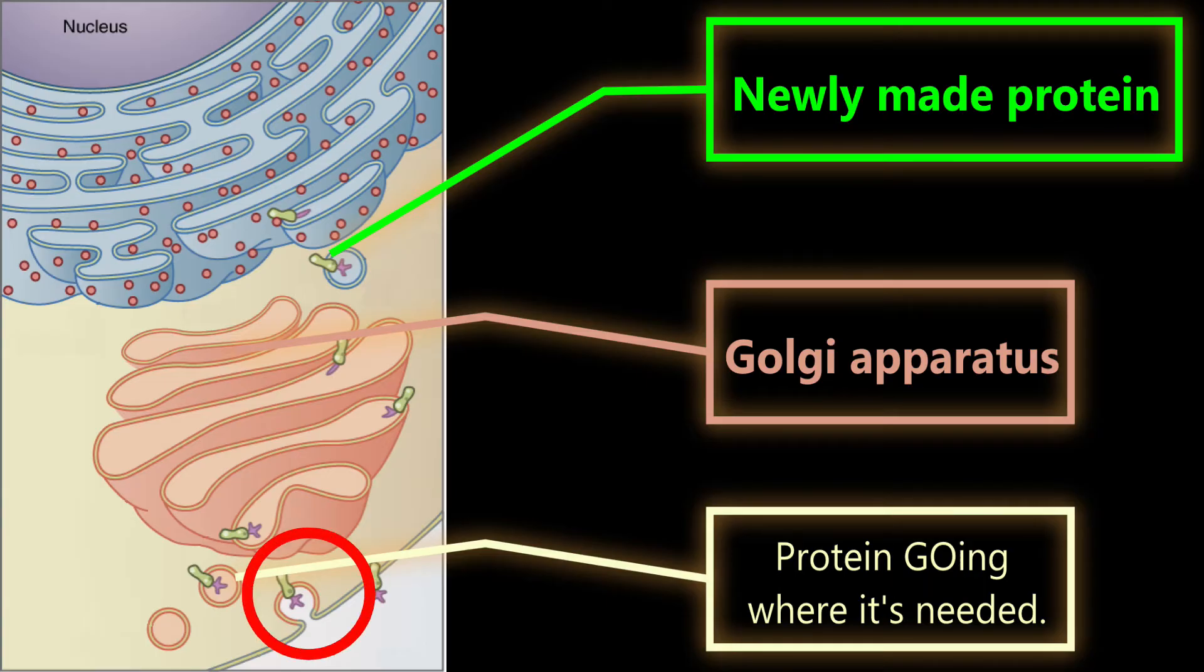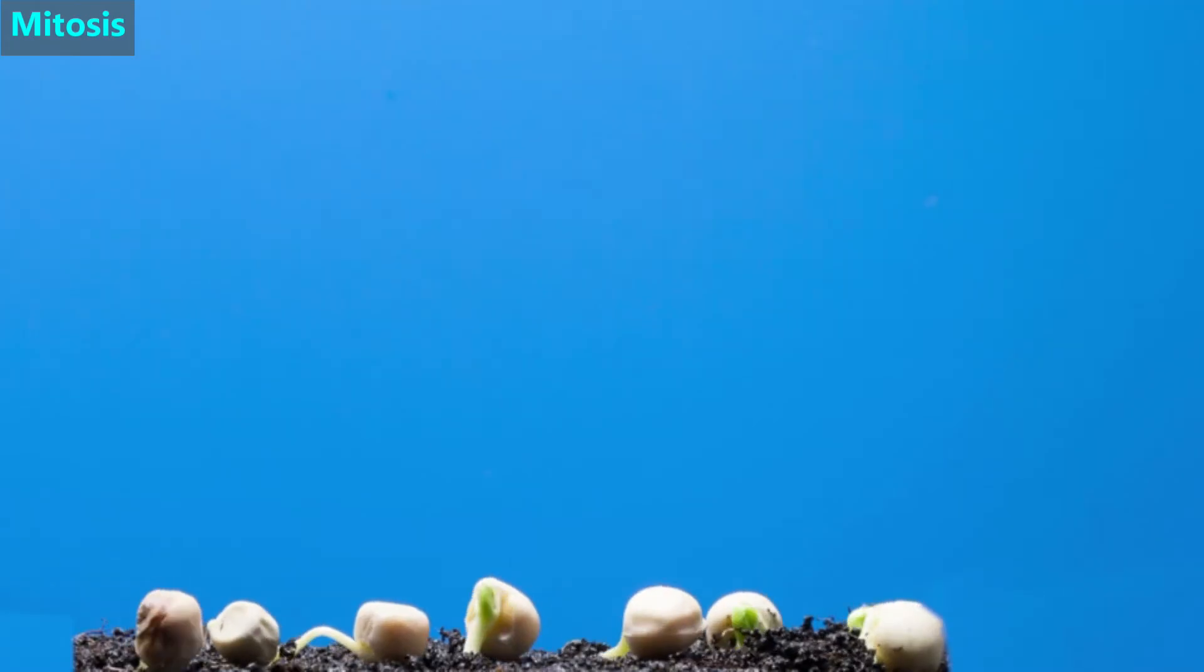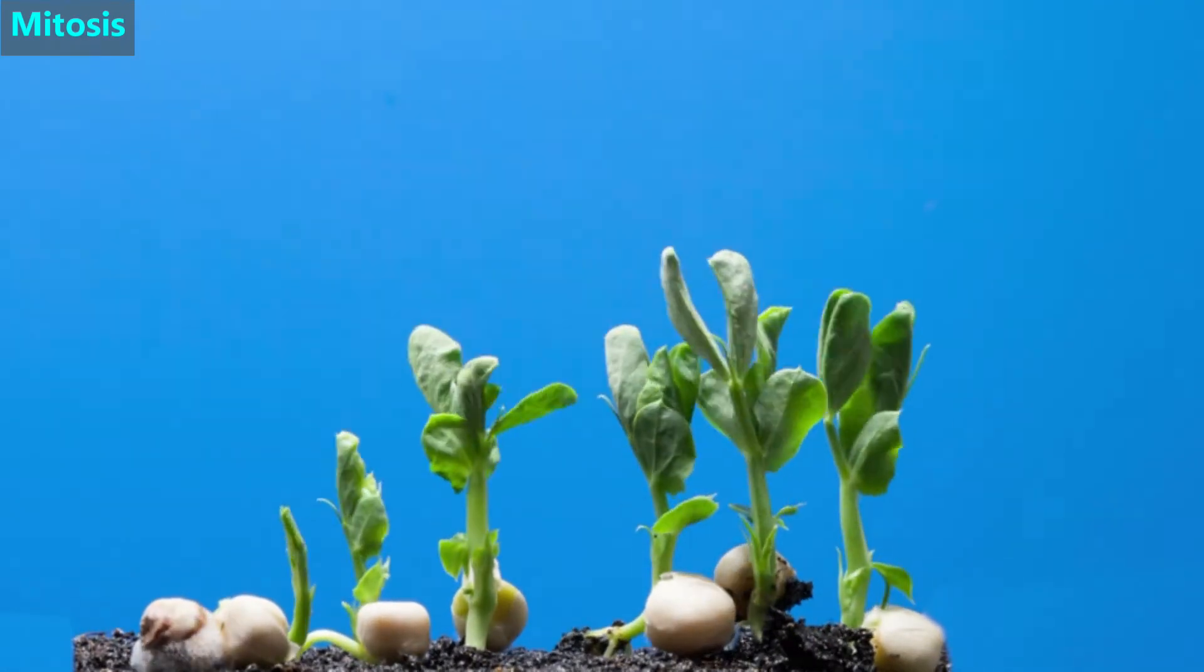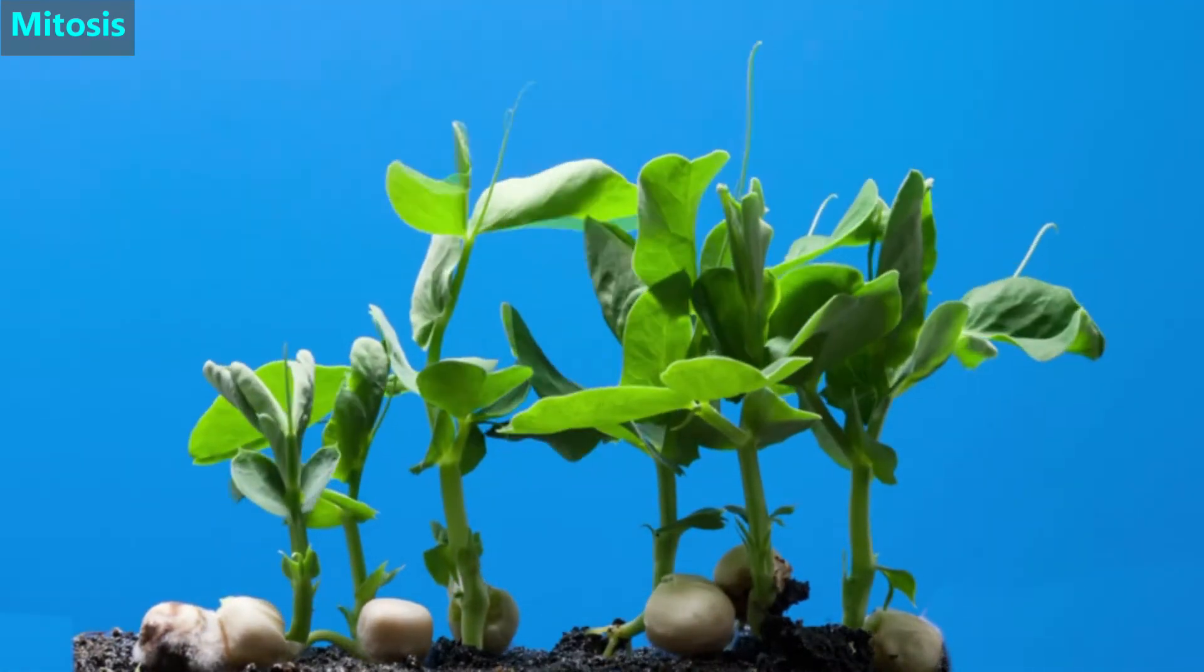The Golgi apparatus can even release the new protein from the cell into blood vessels, so the protein can be used by other parts of the body. Next, we'll talk about cell replication. To grow and repair our bodies, we need new cells.